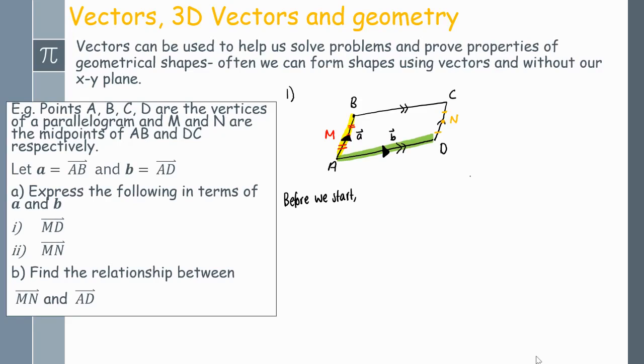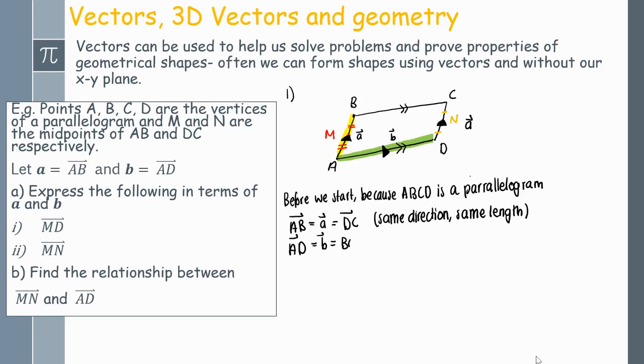Before we start this question, I'm going to label in some vectors. Notice that AD is in the same direction and because this is a parallelogram, is also going to be the same length as BC. So BC and AD in that same direction are actually the same vectors—they're going to be vector b. The same with AB, that is in the same direction and the same length as DC. So AB and DC are also going to be equal and these two are equal to vector a. Be very careful about your direction again—it has to be from D to C that equals vector AB.